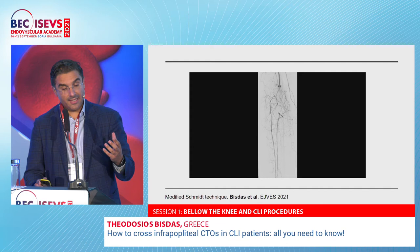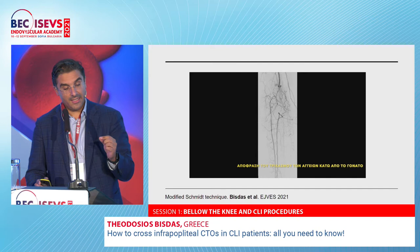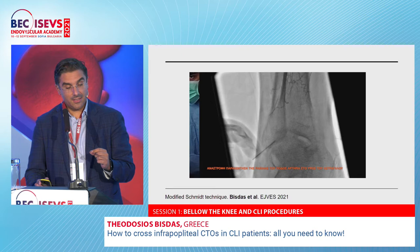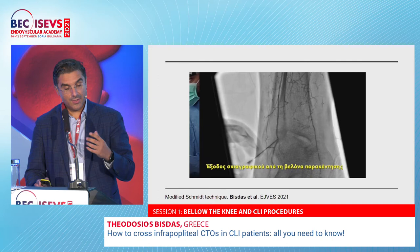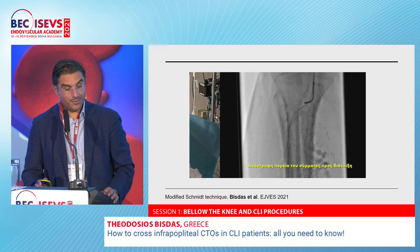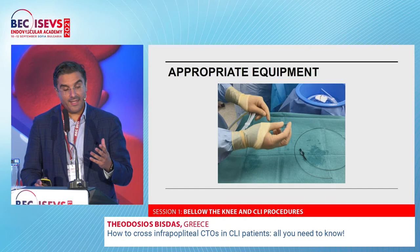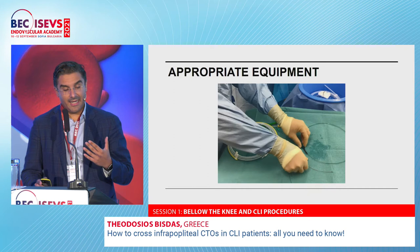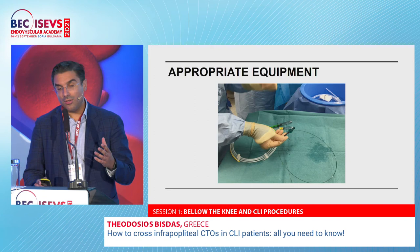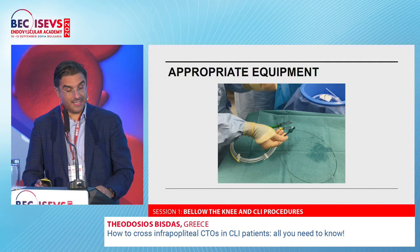Another technique we use: go with the needle very close to the dorsal pedal artery, inject contrast agent, and carefully puncture — you see the contrast coming out and know you are inside. The appropriate equipment includes a needle, an 0.018" wire (V18 Command 18), and if possible a support catheter — the CXI 0.018" support catheter. Don't use 0.014" wires; they won't give you the capability needed for these interventions.